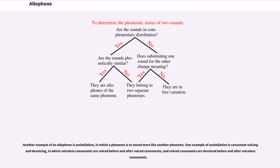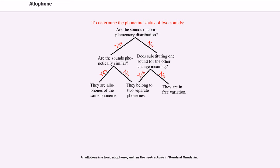in which voiceless consonants are voiced before and after voiced consonants, and voiced consonants are devoiced before and after voiceless consonants. An allophone is a tonic allophone, such as the neutral tone in standard Mandarin.